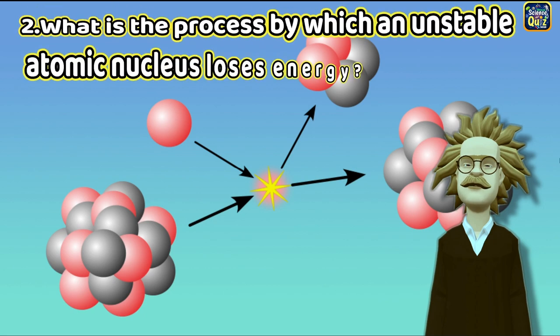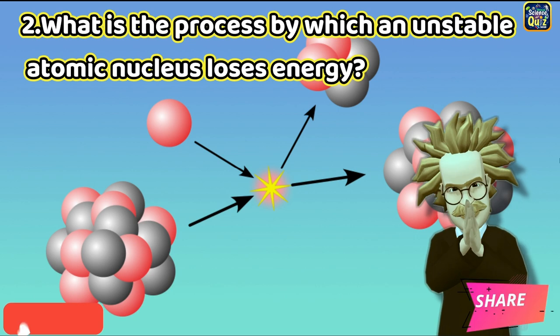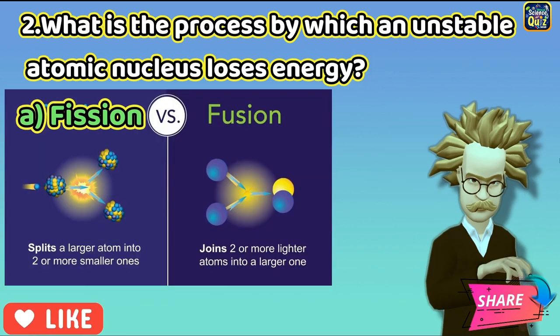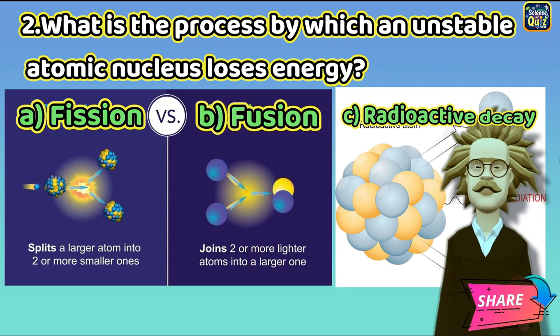Question 2: What is the process by which an unstable atomic nucleus loses energy? A. Fission, B. Fusion, C. Radioactive decay.